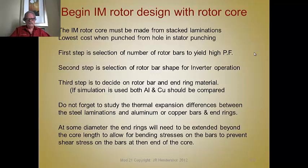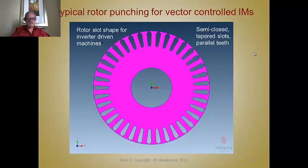At some diameter the end rings will need to be extended beyond the core to allow for bending stresses on the copper bars and to prevent shear stresses on the bars. Otherwise, if there are shear stresses, they're going to fatigue and fail. I've noticed that some large machines — grid motors — have their rating determined by the number of starts.